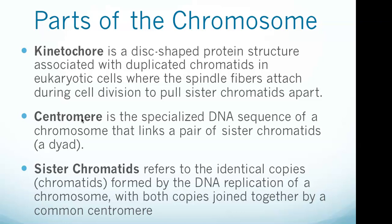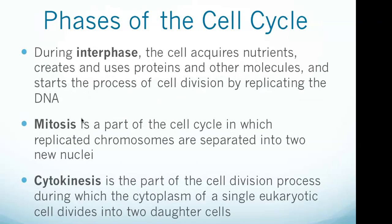A full set of sister chromatids is created during the synthesis phase of interphase — the S phase — when all chromosomes in a cell are replicated. Interphase is the longest stage in the eukaryotic cell cycle. During interphase, the cell acquires nutrients, creates and uses proteins and other molecules, and starts the process of cell division by replicating the DNA. Interphase consists of the stages of the cell cycle not included in mitosis.